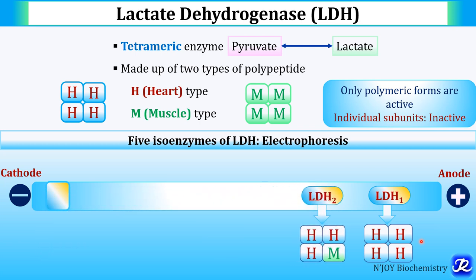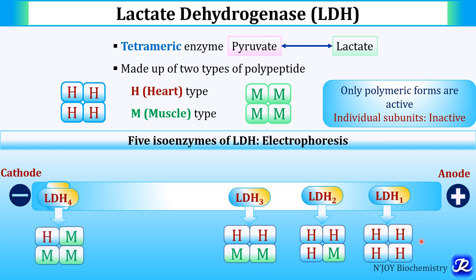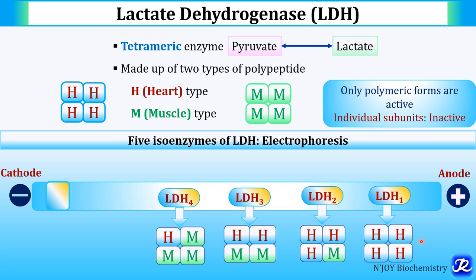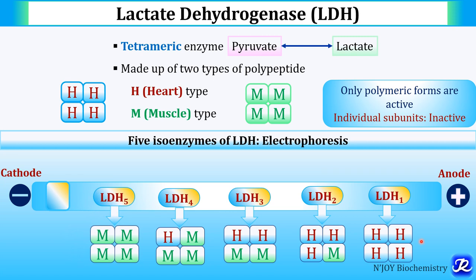LDH2 has lower mobility compared to LDH1 and has three H subunits and one M subunit — it is H3M. LDH3 has two H subunits and two M subunits — H2M2. LDH4 has one H subunit and three M subunits — H1M3. LDH5 has the slowest electrophoretic mobility and all M subunits — it is M4.